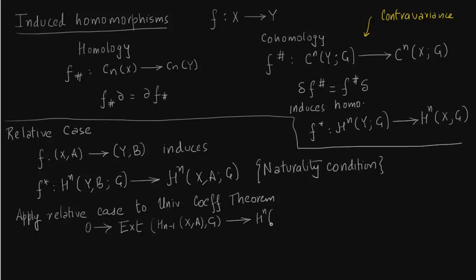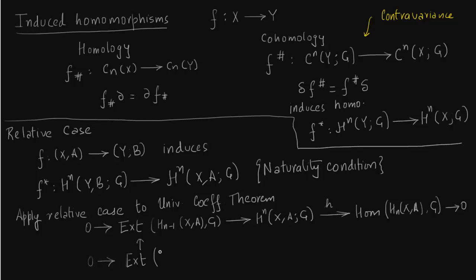We want to apply the naturality condition, which is exactly the same as in homology — you should be able to go between different homology groups and the long exact sequence. If you do not know this, you should stop here and check the naturality condition in homology and look at the commutative diagram, which is nothing but a natural transformation in category theory. That naturality condition induces the universal coefficient theorem. If you do not know the naturality condition, you should stop now and see it within Hatcher. The naturality condition is very important: it basically links two different homology groups and entire long exact sequences are linked.